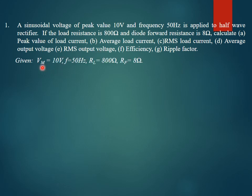The given parameters are: peak value Vm = 10 volts, frequency = 50 Hz, load resistance RL = 800 ohms, and forward resistance RF = 8 ohms. First, we need to determine the peak value of current so that we can determine IDC and the RMS value of the load current.